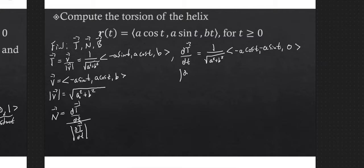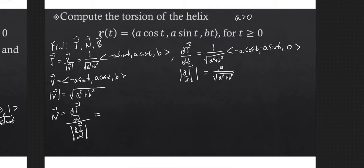The magnitude of dT/dt: I'll get √(a² cos²t + a² sin²t), which is just √(a²). We'll assume a > 0, so that's just a. So |dT/dt| = a/√(a² + b²). That means n is dT/dt divided by that magnitude. Some nice cancellation happens — the 1/√(a² + b²) cancels, and then the a's cancel — giving unit normal vector n = (−cos t, −sin t, 0).